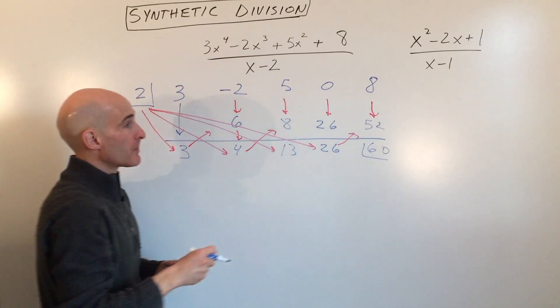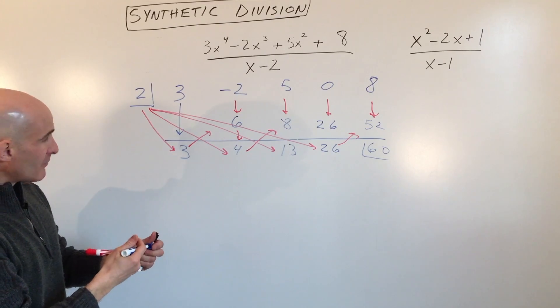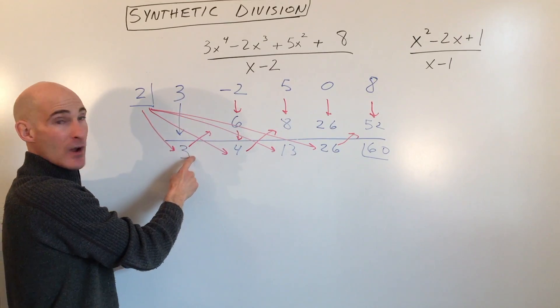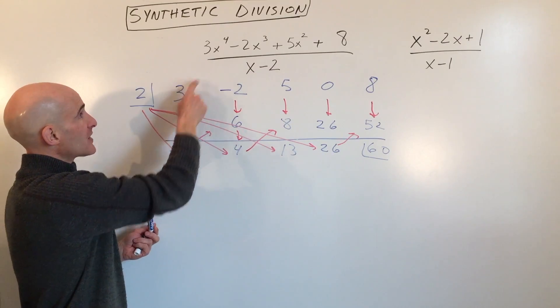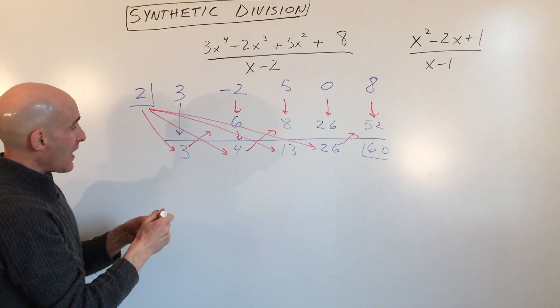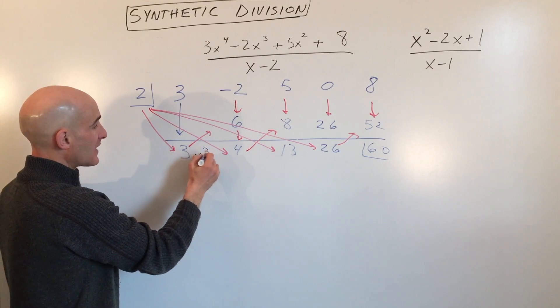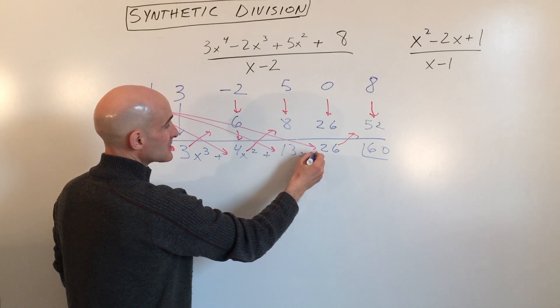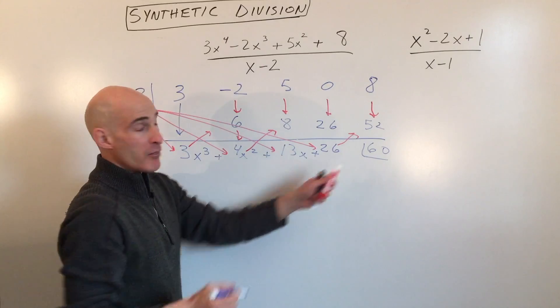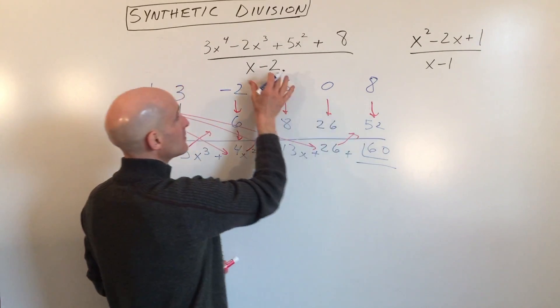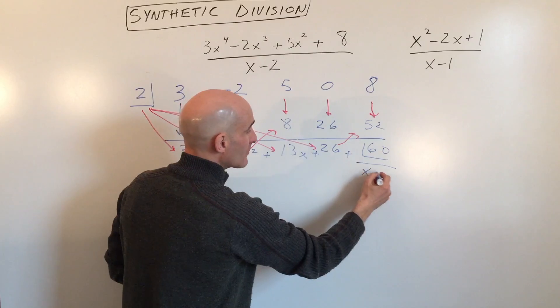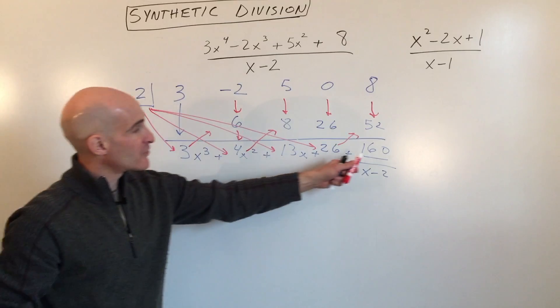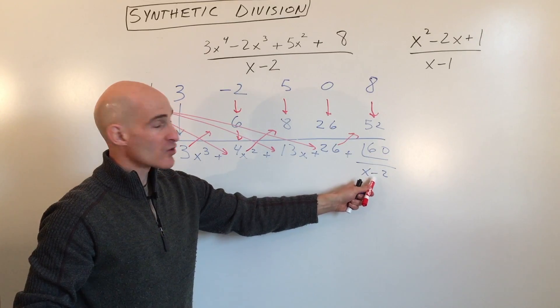This is the remainder. So now what we're going to do, since we were dividing by x minus 2, this is 3x to the 4th, this goes down always by 1 degree. So if you start with x to the 4th, now this is going to be x cubed. So what we have is 3x cubed plus 4x squared plus 13x plus 26 plus the remainder 60 over the divisor, what you're dividing by. That's your quotient, that's your answer. Just remember if there's a remainder here, put the remainder over what you're dividing by.